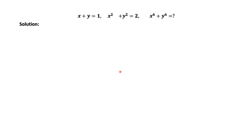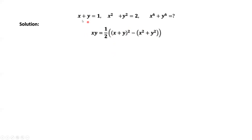Let's find the value of x times y first. x times y equals one half times the quantity x plus y squared minus x squared plus y squared. It's easy to check this equation is true. From the first and second given conditions, we have x plus y equals 1 and x squared plus y squared equals 2. Therefore, x times y equals negative one half.